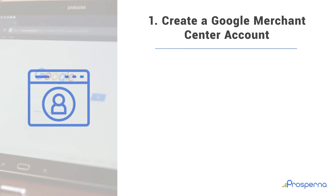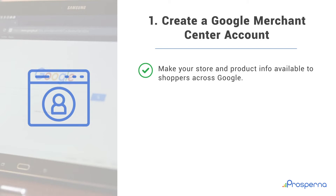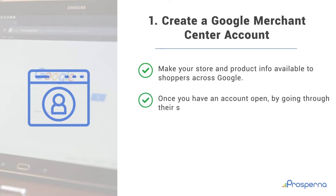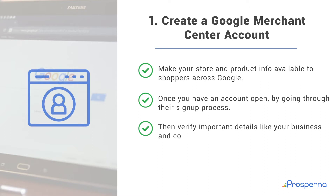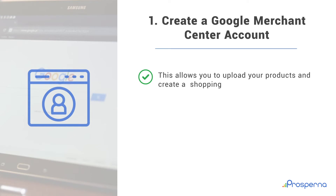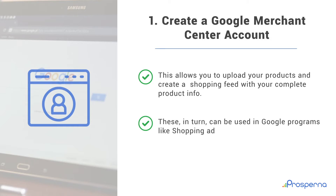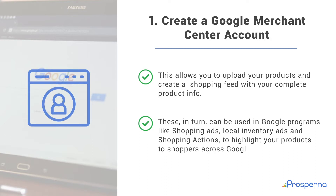Number 1: Create a Google Merchant Center Account. Make your store and product info available to shoppers across Google. Once you have an account open by going through their sign-up process, verify important details like your business and contact information. This allows you to upload your products and create a shopping feed with your complete product info, which can be used in Google programs like Shopping Ads, Local Inventory Ads, and Shopping Actions to highlight your products to shoppers across Google.